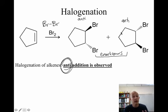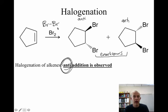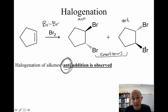Halogenation must take place by a different mechanism than hydrogenation because we have a different stereochemical outcome. What's really important to remember: halogenation — bromination in this case — takes place to give anti products. You get a mixture of enantiomers. So let's look at the mechanism to understand what's going on here.